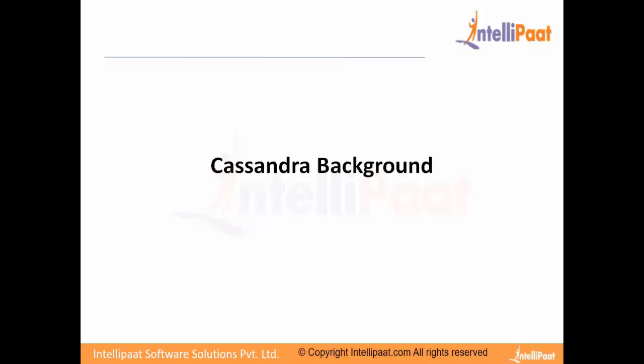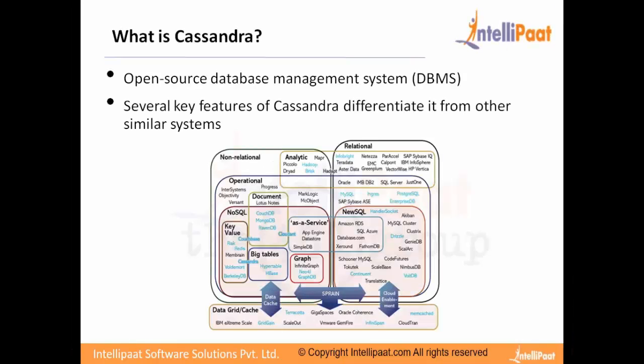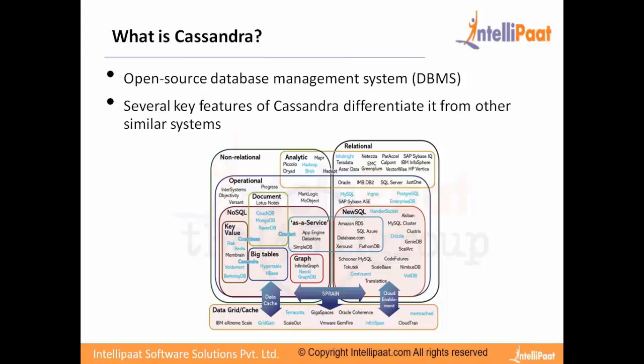We'll discuss the Cassandra background — why there was a need for something like Cassandra when we already had RDBMS in place. Cassandra is an open-source database with features that differentiate it from other similar systems, including traditional RDBMS. Cassandra belongs to the NoSQL fraternity. NoSQL stands for 'Not Only SQL' and differs from RDBMS in how it stores data.